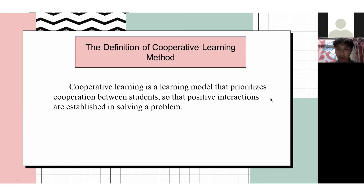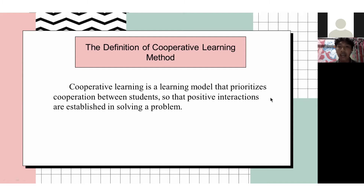According to Slavin, cooperative learning refers to a variety of teaching methods in which students work in small groups to help each other in learning subject matter. It is intended that the learning process is not dominated by one person, but each group member has the same obligation and responsibilities in solving group problems.